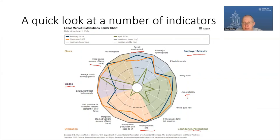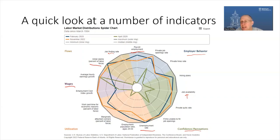One problem when talking about the labor market is that data are measured in many different ways. Payroll employment is measured in the millions, changing by hundreds of thousands per month; the job finding rate is measured in percent. So there are different scales across metrics. What the spider graph does is collapse all of these into a common denominator — effectively an index value measured relative to a peak or trough. The closer you are to the edge of the wheel, the better; the closer to the center, the worse.